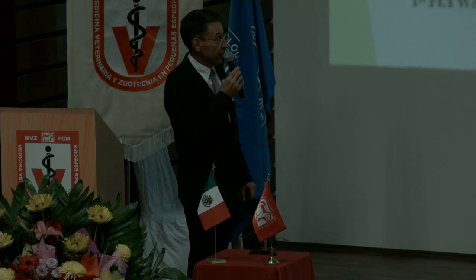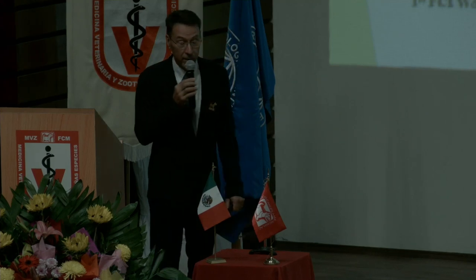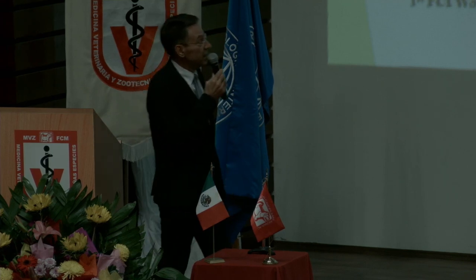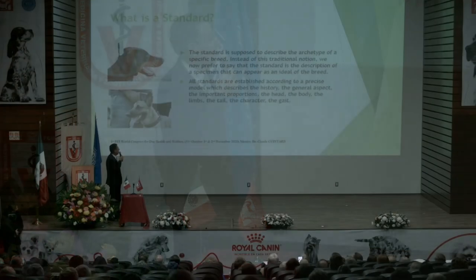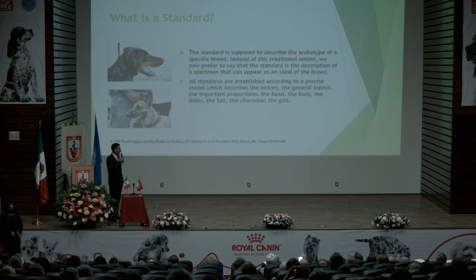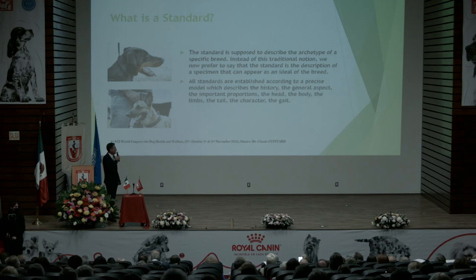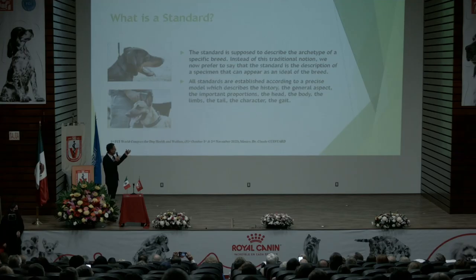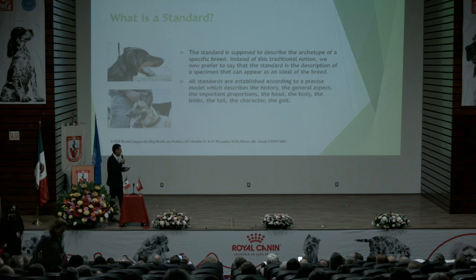The standard is supposed to describe the archetype of a specific breed. Instead of this traditional notion, we now prefer to say that the standard is a description of a specimen that can appear as an ideal of a breed. All standards are established according to a precise model which describes the history, the general aspect, the important proportions, the head, the body, the limbs, the tail, the character, the gait.